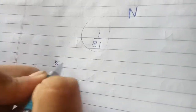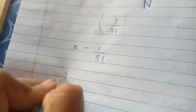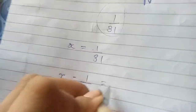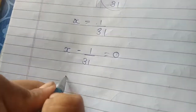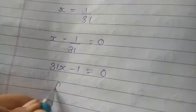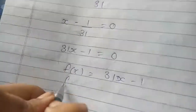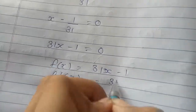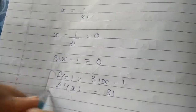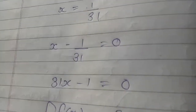Toh humara x is equal to 1 upon 31. Toh yeh ho jayega x minus 1 upon 31 is equal to 0, means 31x minus 1 is equal to 0. Toh yeh hamara function ho gaya: f(x) = 31x minus 1. Aur f dash x ho jayega 31. Toh isko hum formula mein put kar denge, toh hamara answer aa jayega.